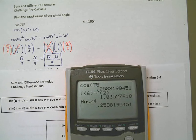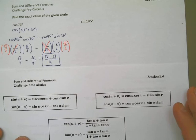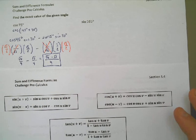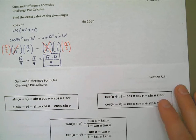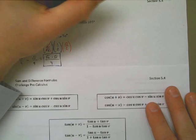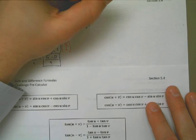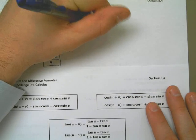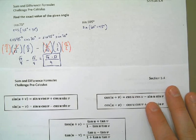Okay, let's try this one. Sine of 105. Now, how can I get 105 out of things like angles that I know, either an axis, 0, 90, 180, 270, or I'm looking for 30s, 45s, and 60s. So, let's see, 105 would be a combination of 60 degrees and 45 degrees, right? 60 plus 45 is 105.